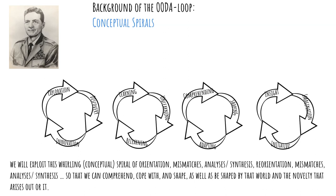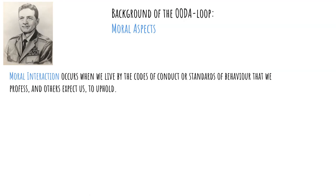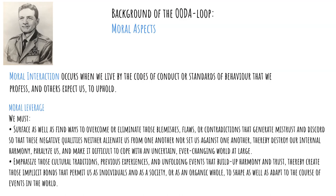The moral aspects of decision-making take center stage with Boyd. He distinguishes between moral interaction, described as: moral interaction occurs when we live by the codes of conduct or standards of behavior that we profess, and others expect us to uphold. And moral leverage, of which he says that we must surface as well as find ways to overcome or eliminate those blemishes, flaws, or contradictions that generate mistrust and discord, so that these negative qualities neither alienate us from one another, nor set us against one another, thereby destroy our internal harmony, paralyze us, and make it difficult to cope with an uncertain, ever-changing world at large.